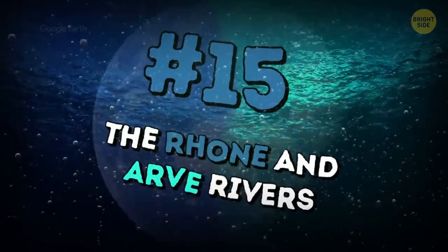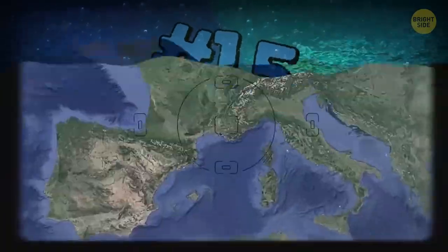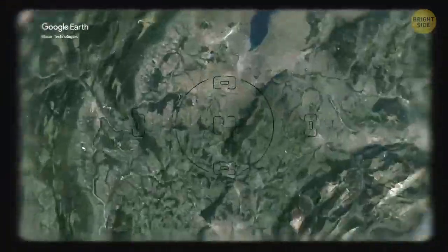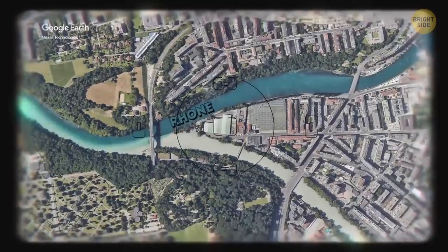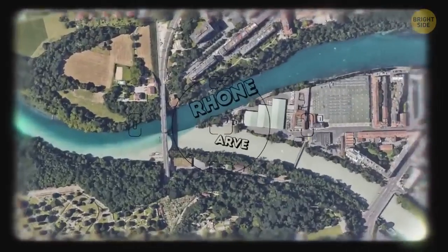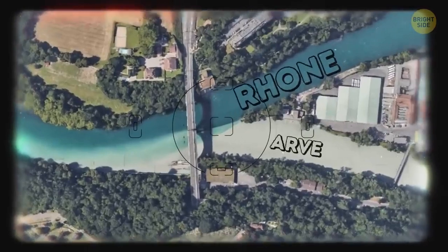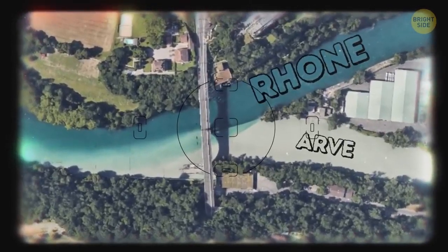The Rhône and Arve rivers: They flow into each other in Geneva, Switzerland. The Rhône is a pure river that flows out of the lake of Geneva. The Arve is cloudy as it gets its water from the glaciers of the Chamonix Valley.